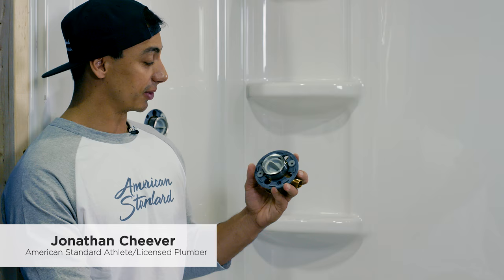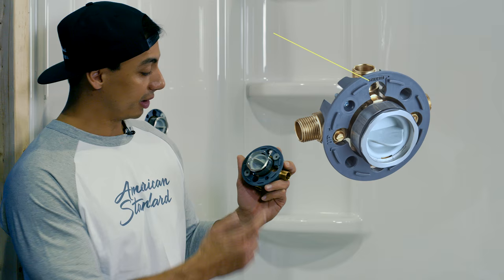All American standard channel valves come with a PlastiGuard. Right now we have our PlastiGuard with thin wall pointing up since we're doing this on a thin wall setup.